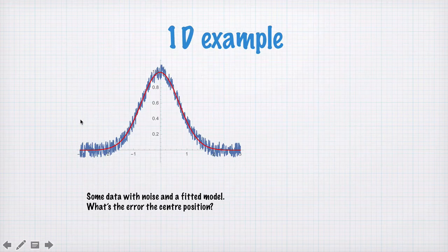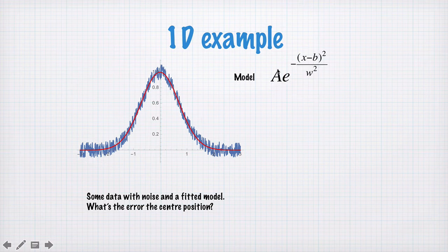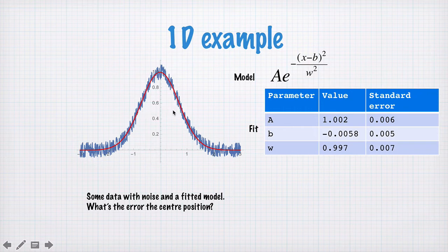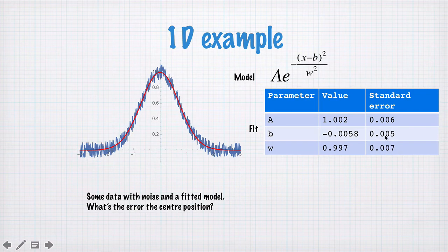Here's an example in 1D. Here's some noisy data, and I've fitted a curve to it — the model I'm fitting is a Gaussian. It has some amplitude A, some position B on the x-axis, and some width W. I can fit the red line using Mathematica or a similar tool and find parameters A, B, and W with their standard errors. Although my distribution here is wide — the width is about 1 — the position B is known to within much, much better than 1. The standard error in the centre of this peak is much smaller than that width.